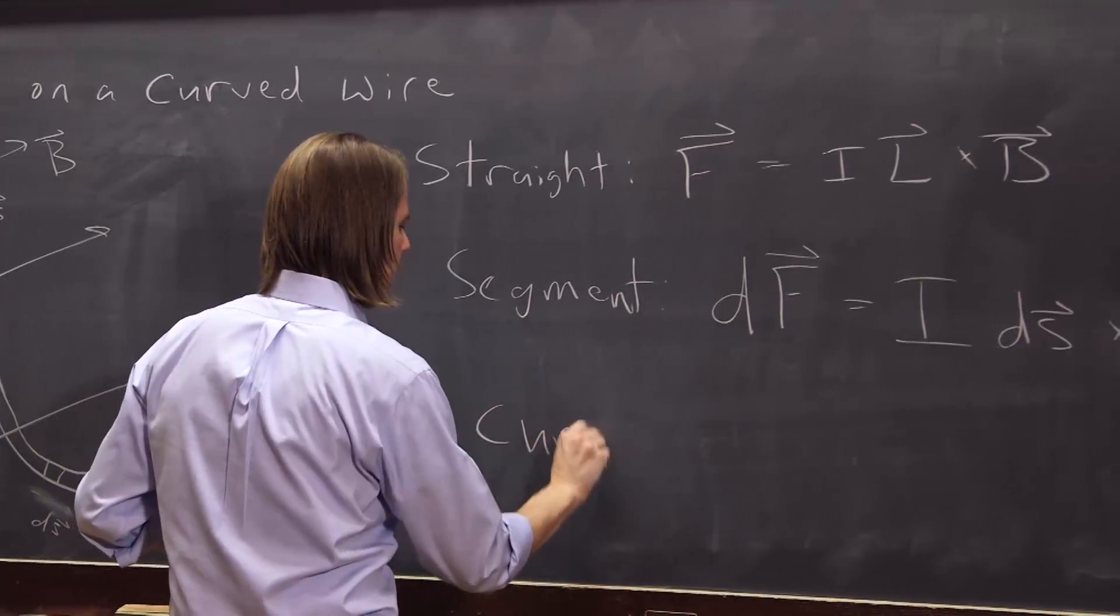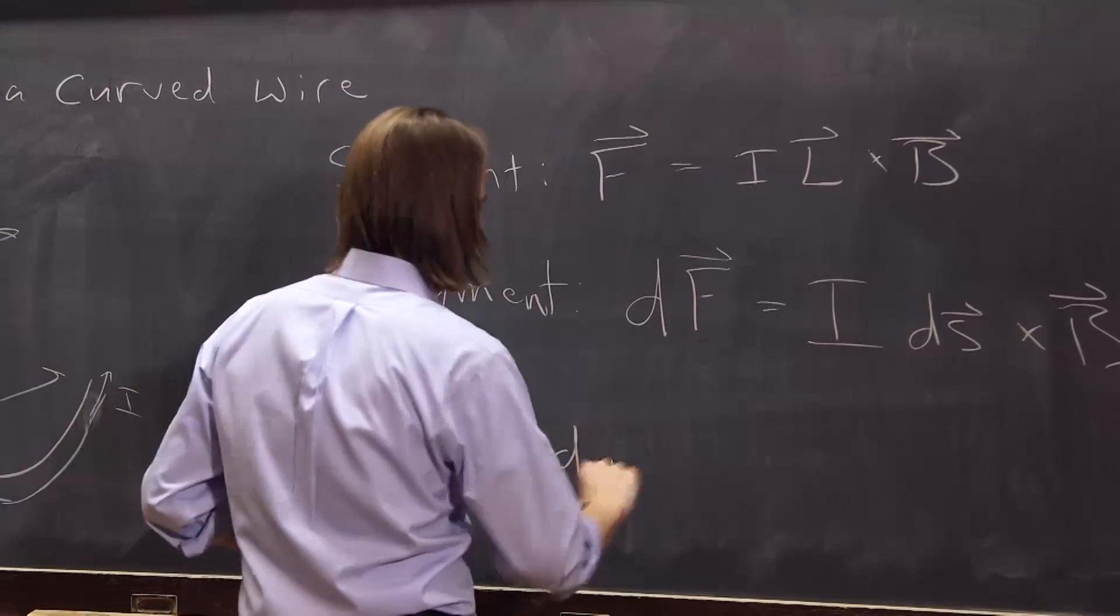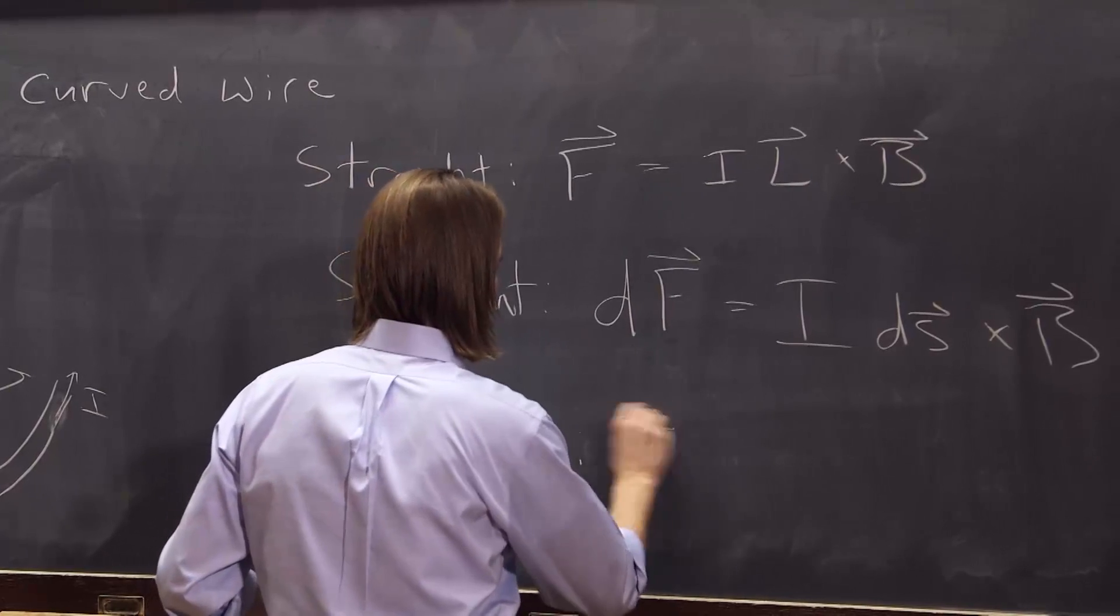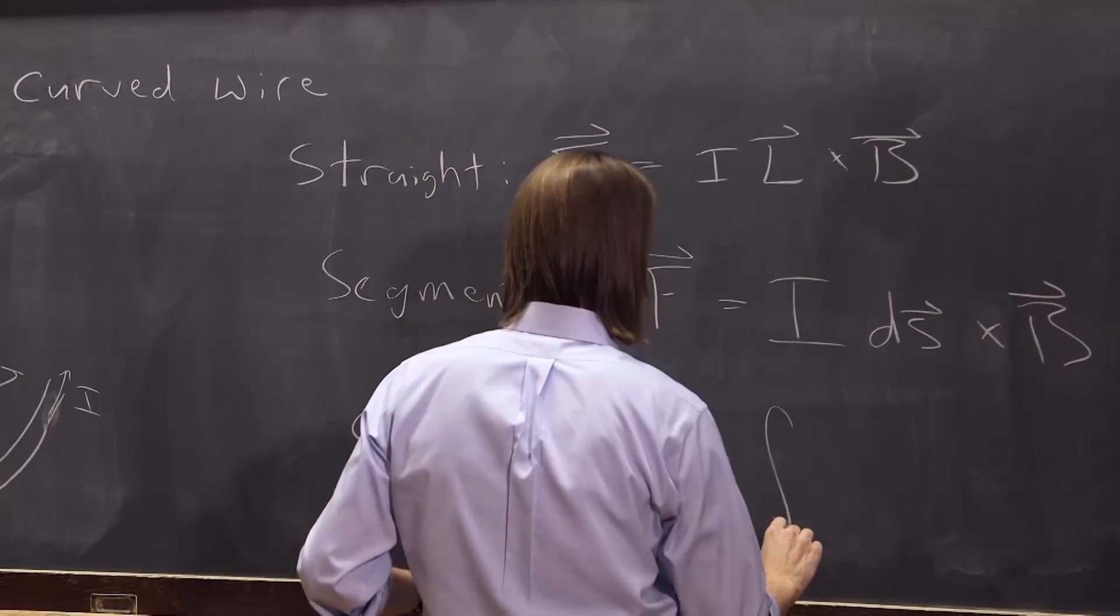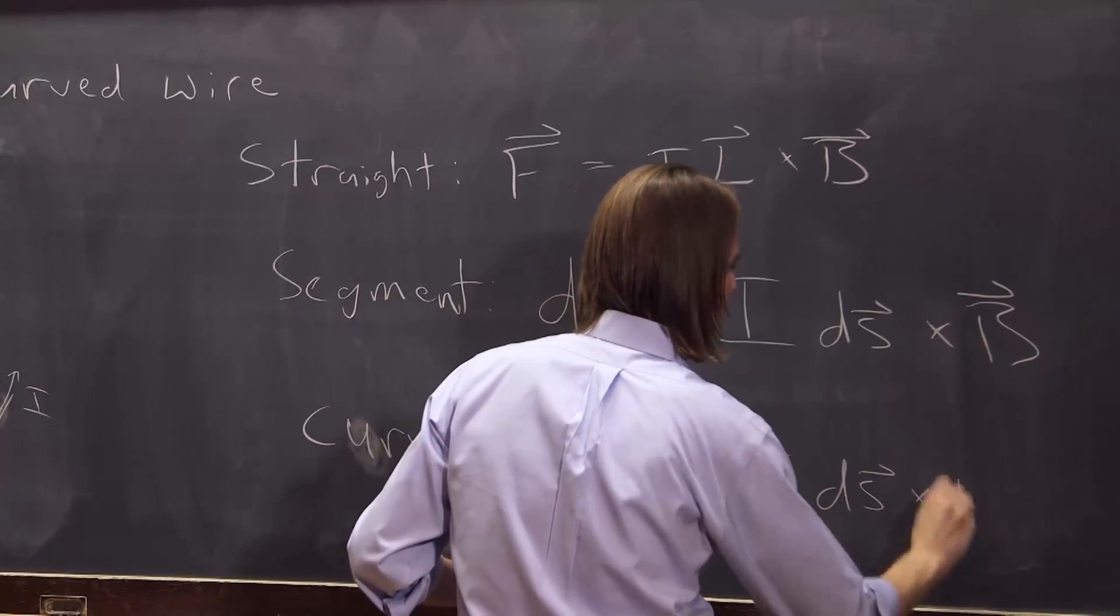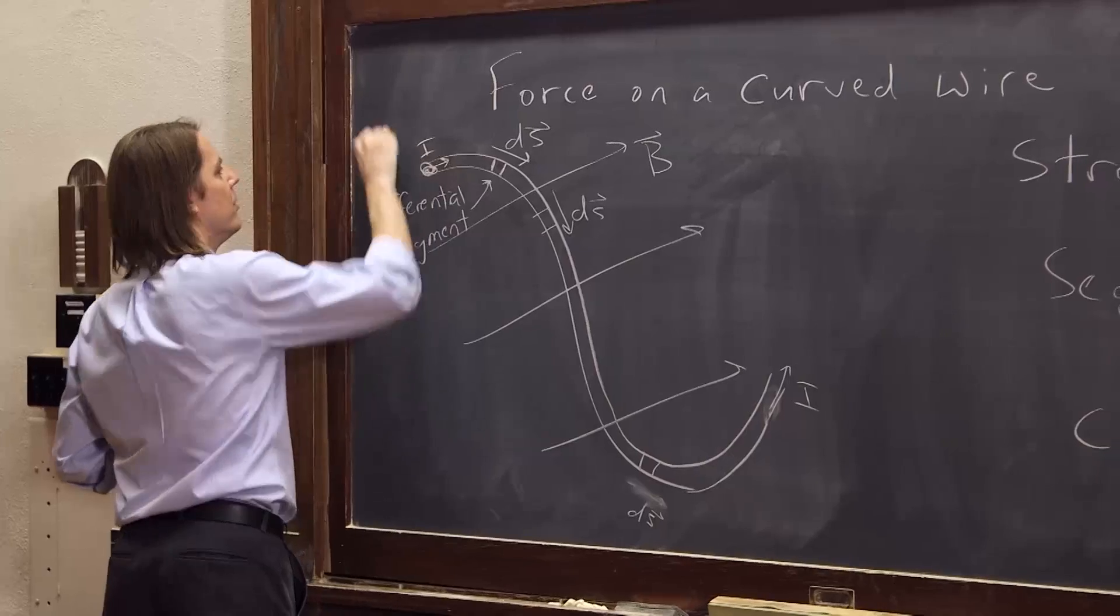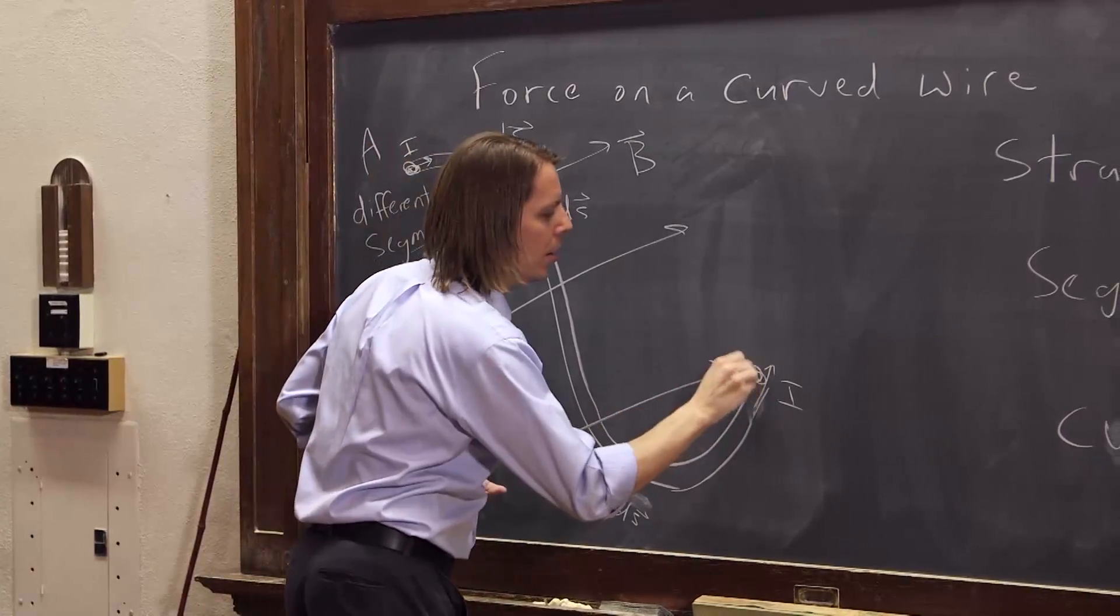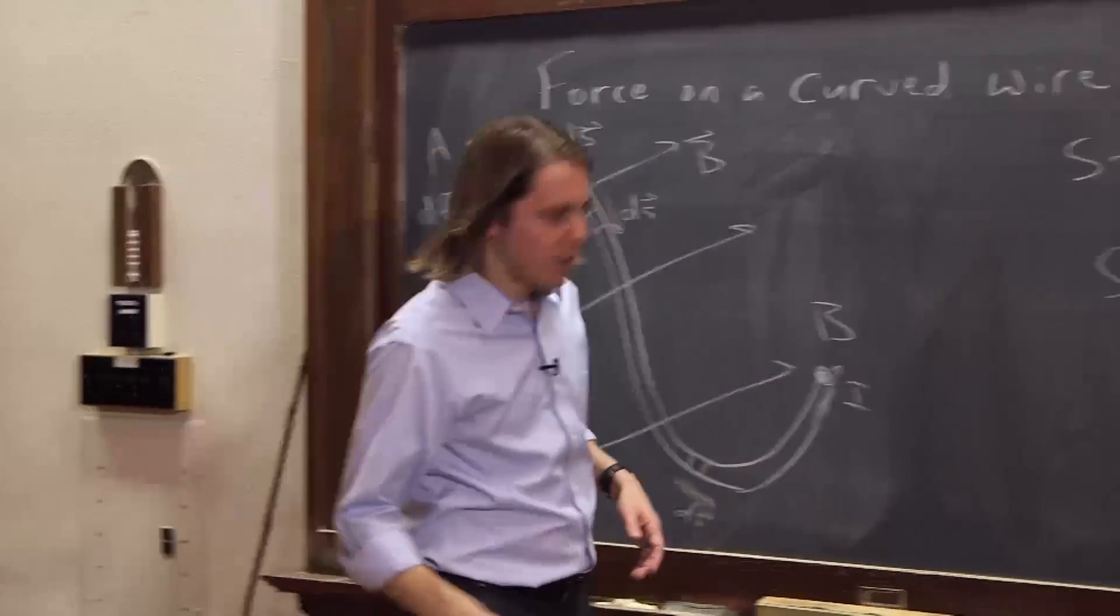So let's say for a curved wire, then we just integrate to get the total force, FB. And it would be the integral of I dS cross B. And we have to say from where to where. Well, we could sort of start here and go here. If we want to do the whole thing, we could go from A to B.